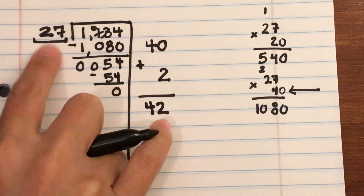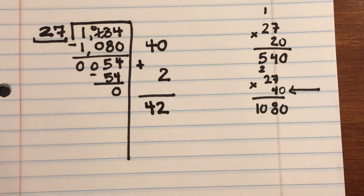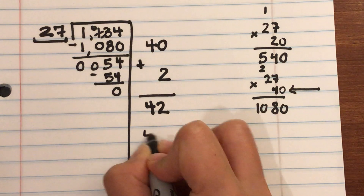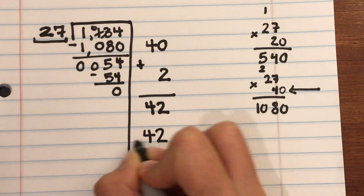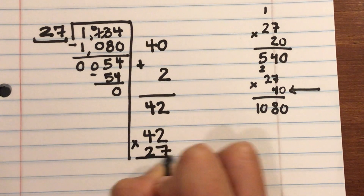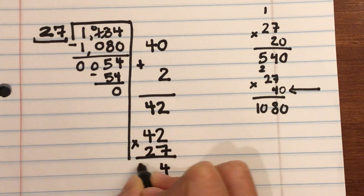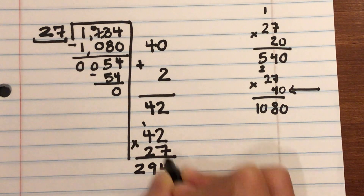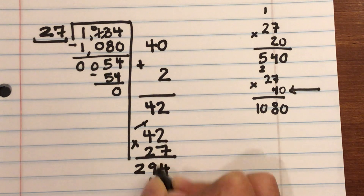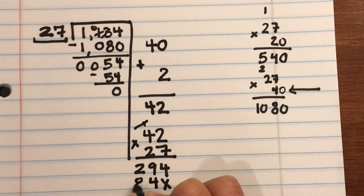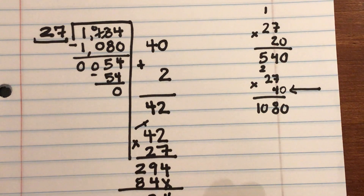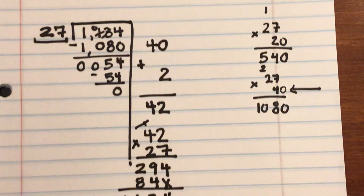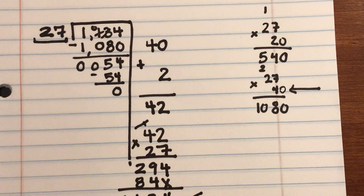With division you always want to check your work: multiply your quotient by your divisor to get your dividend. So 42 × 27 = 1,134. That matches, so my answer is confirmed.